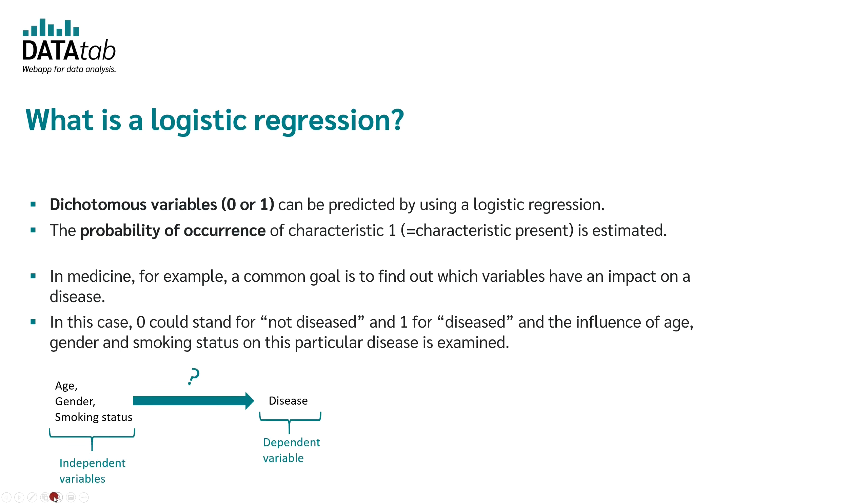So here we can see this example in a graph. On the left side we see the independent variables age, gender and smoking status. And on the right side we have our dependent variable which is disease yes or no. And we want to use our independent variables in order to predict whether a person gets a disease or doesn't get the disease.